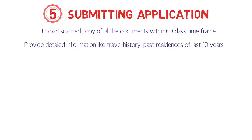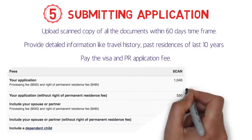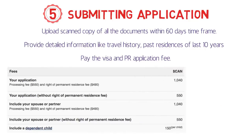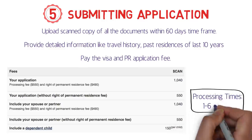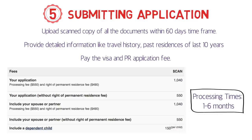You also need to pay the visa and PR application fee. According to the official canada.ca website, a single applicant pays around CAD $1,040; including a spouse roughly doubles that amount. After submitting, processing times range from one to six months — typically two to three months, though in some cases it can take up to six months.